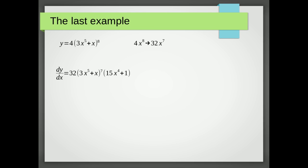Now instead of 32x to the 7 we're going to use that inner function and say that's 32 times 3x to the 5 plus x to the 7 and then all we've got to do is multiply that result by that inner part differentiated so it becomes 15x to the 4 plus 1.